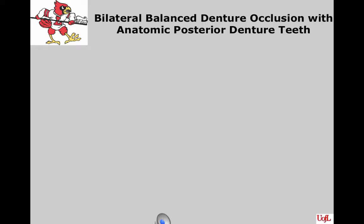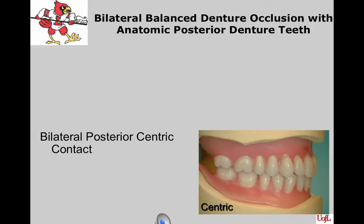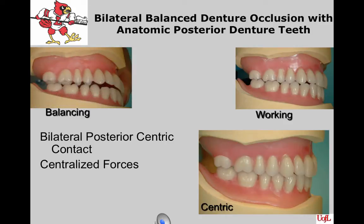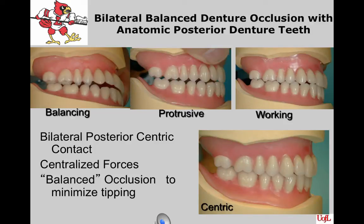Looking at these pictures, in centric relation you have bilateral posterior contact — all of those lingual cusps are in the fossae of the mandibular teeth, so you have centralized forces down the ridge simultaneously all the way around. In working, those buccal cusps are still in contact. On the balancing side, the lingual cusps ride up the inner inclines of the buccal cusps and remain in contact. In protrusive, even those posterior molars touching minimizes the tipping that a denture will do.